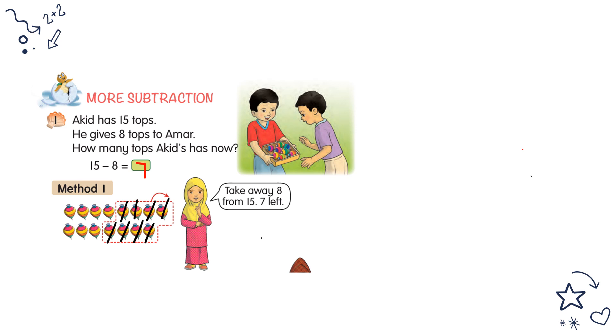Method number two, you can do in column form. 15 minus 8. The place value for 5 is ones, and tens place value for 1 is 10. Now 15 minus 8 equals 7.